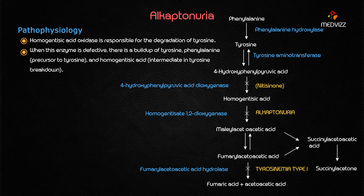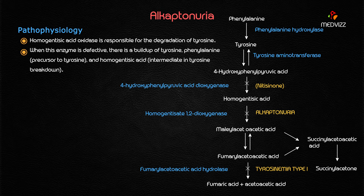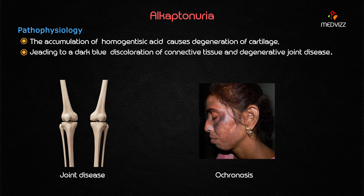Homogentisic acid oxidase is responsible mainly for the degradation of tyrosine. When this enzyme is defective, there is a buildup of tyrosine and phenylalanine — since phenylalanine is a precursor to tyrosine — as well as an accumulation of homogentisic acid, which is an intermediate in the tyrosine breakdown pathway.